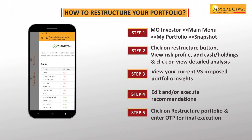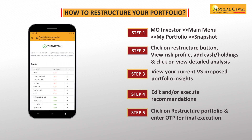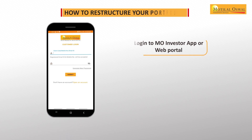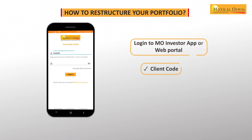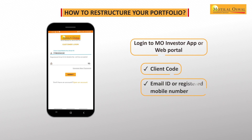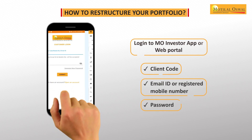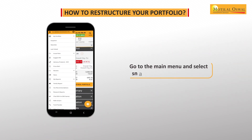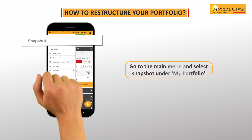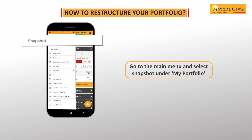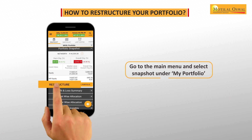Let us help you understand these steps in detail. Login to MO Investor app or web portal with your client code, email ID or registered mobile number and your password. Go to the main menu and select snapshot under My Portfolio. Tap on the restructure button to proceed.